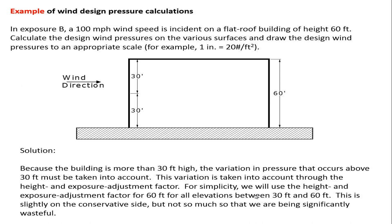This is a repeat, but I'm going to run through it really fast. Exposure B, 100 mile per hour wind speed is incident on the building. Because the building is more than 30 feet high, the variation in pressure that occurs above the 30 feet must be taken into account. We're going to do that by using the height and exposure adjustment factor, and we're going to simplify it because that factor is variable from 30 feet up to 60 feet. We're going to use the height and exposure adjustment factor for 60 feet for all elevations above 30 feet. That's just to simplify the arithmetic, and when we plot the diagram, you will see how inconsequential the difference is. We're on the slightly conservative side, but not so much that we're being wasteful.